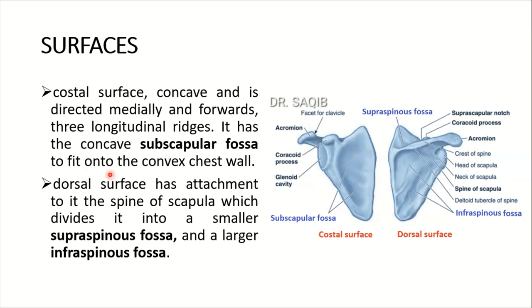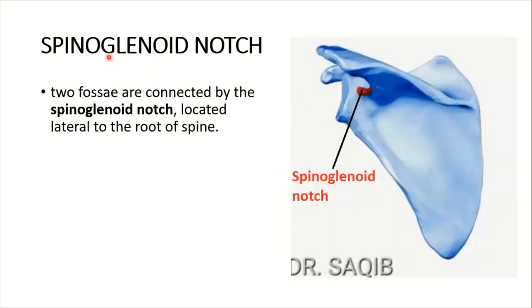It fits the convex chest wall. The dorsal surface has attachments to the spine. The spine of the scapula divides it into a smaller supraspinous fossa and the larger infraspinous fossa. These supraspinous and infraspinous fossae are connected to each other via the spinoglenoid notch.